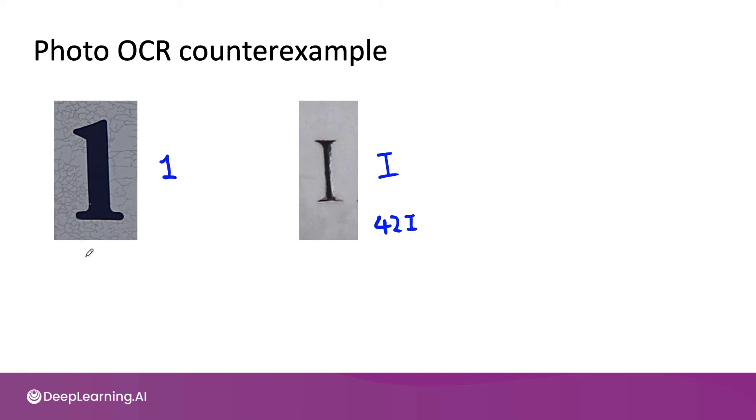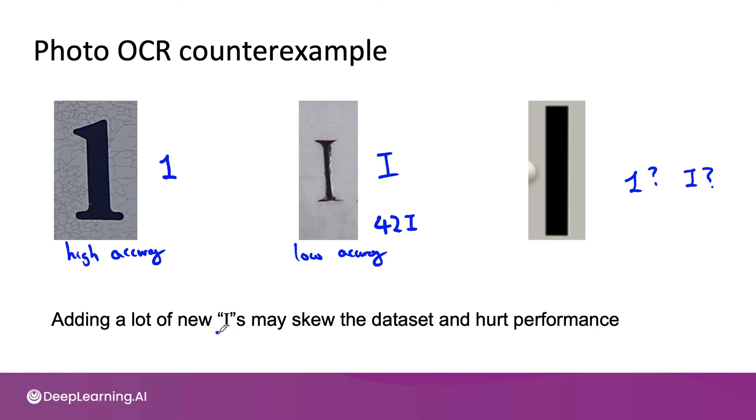If you find that your algorithm has very high accuracy on recognizing ones, but low accuracy on recognizing I's, one thing you might do is add a lot more examples of I's into your training set. And the problem, and this is a rare problem, is there are some images that are truly ambiguous. Is this a one, or is this an I? And if you were to add a lot of new I's to your training set, especially ambiguous examples like this, then that may skew the dataset to have a lot more I's and hurt performance.